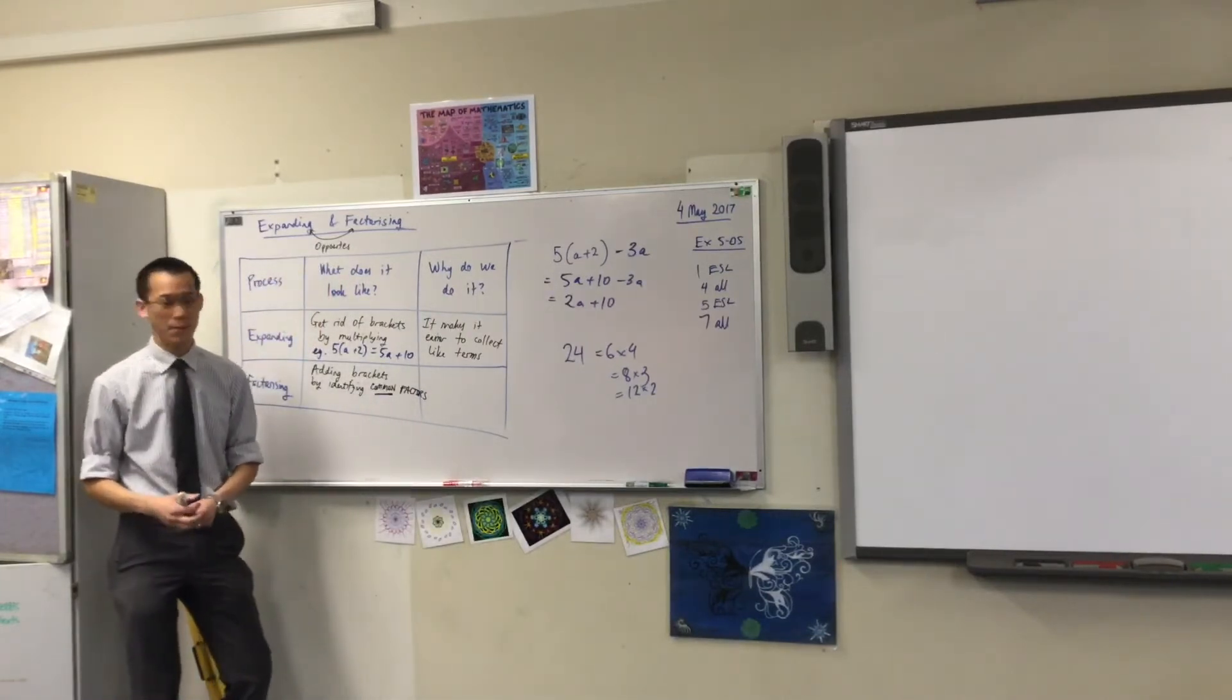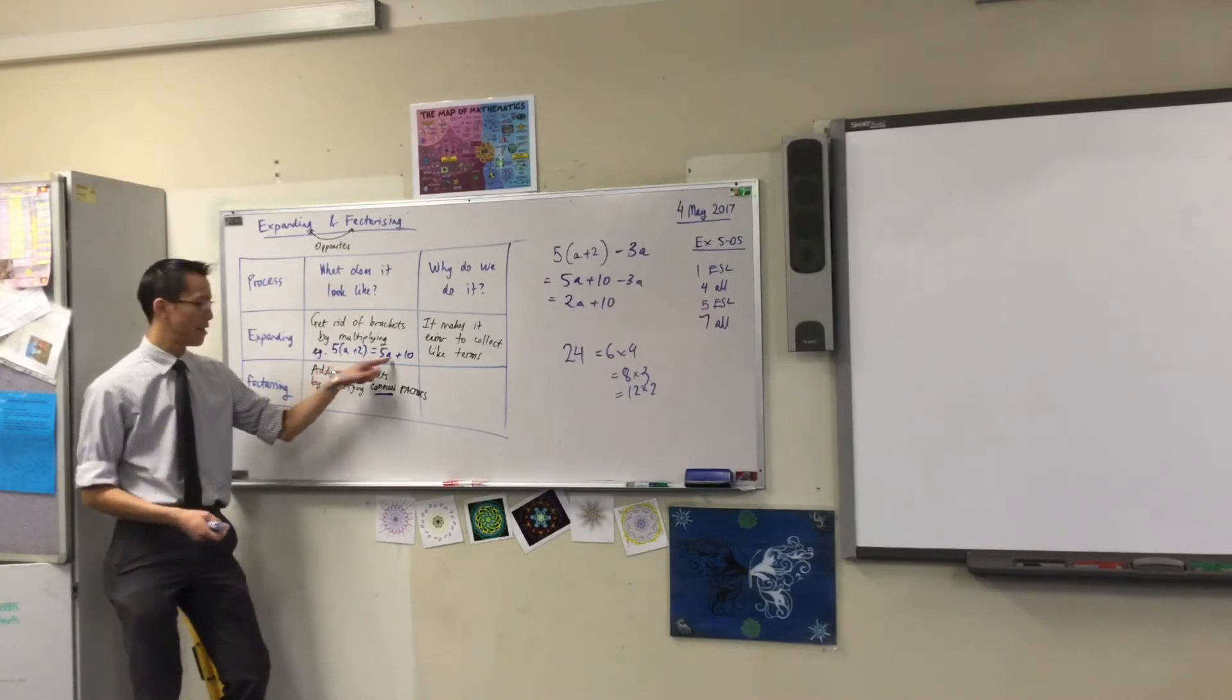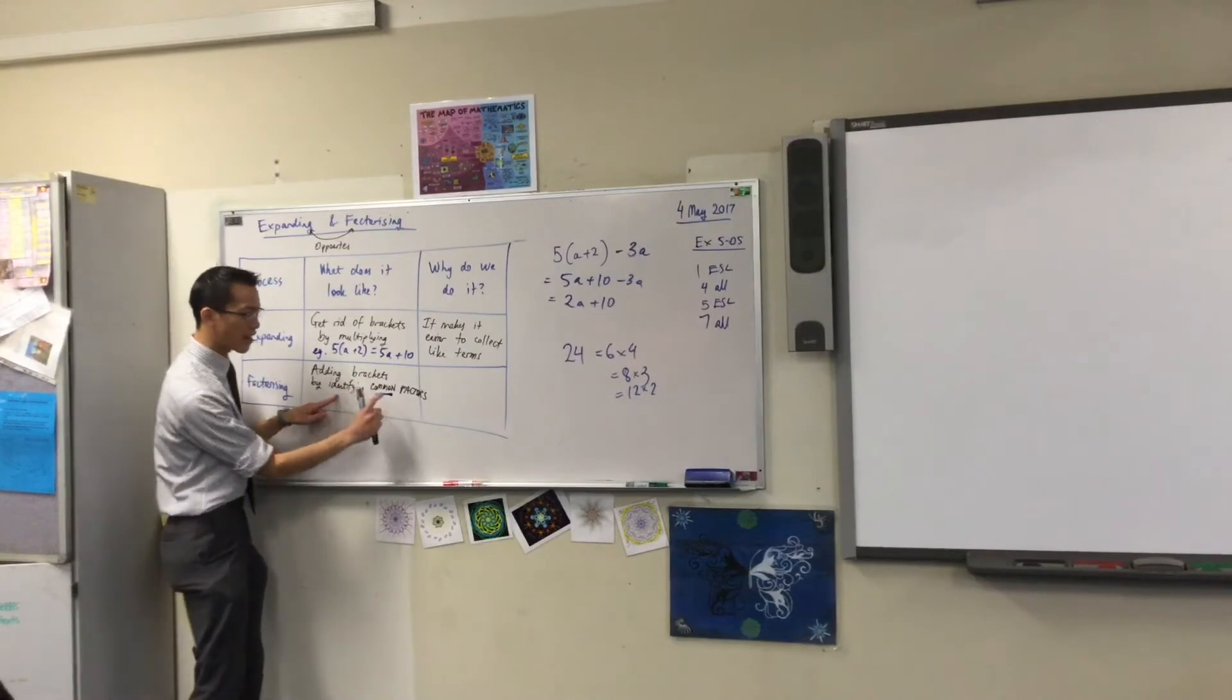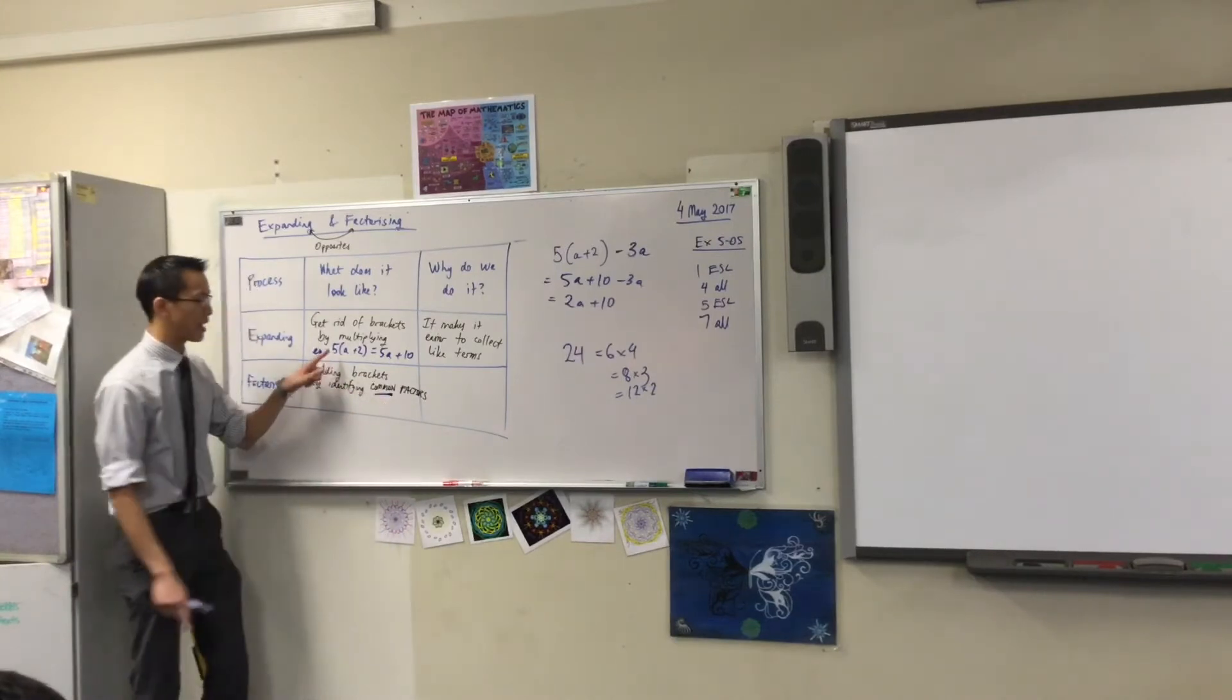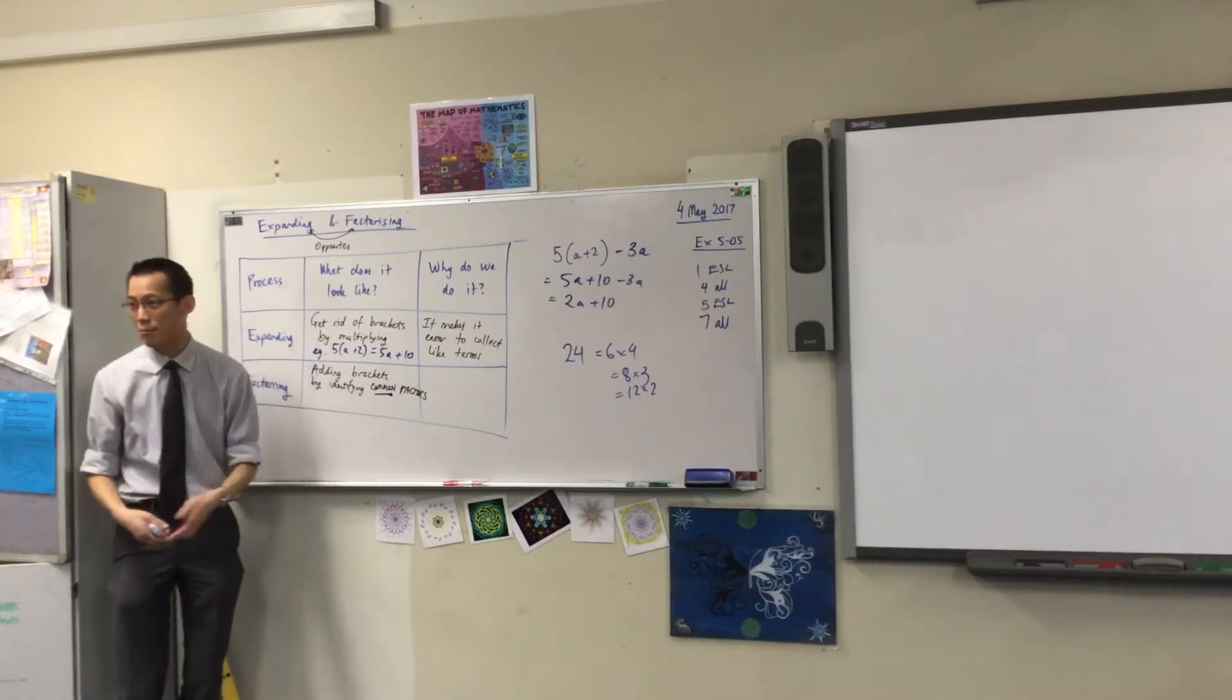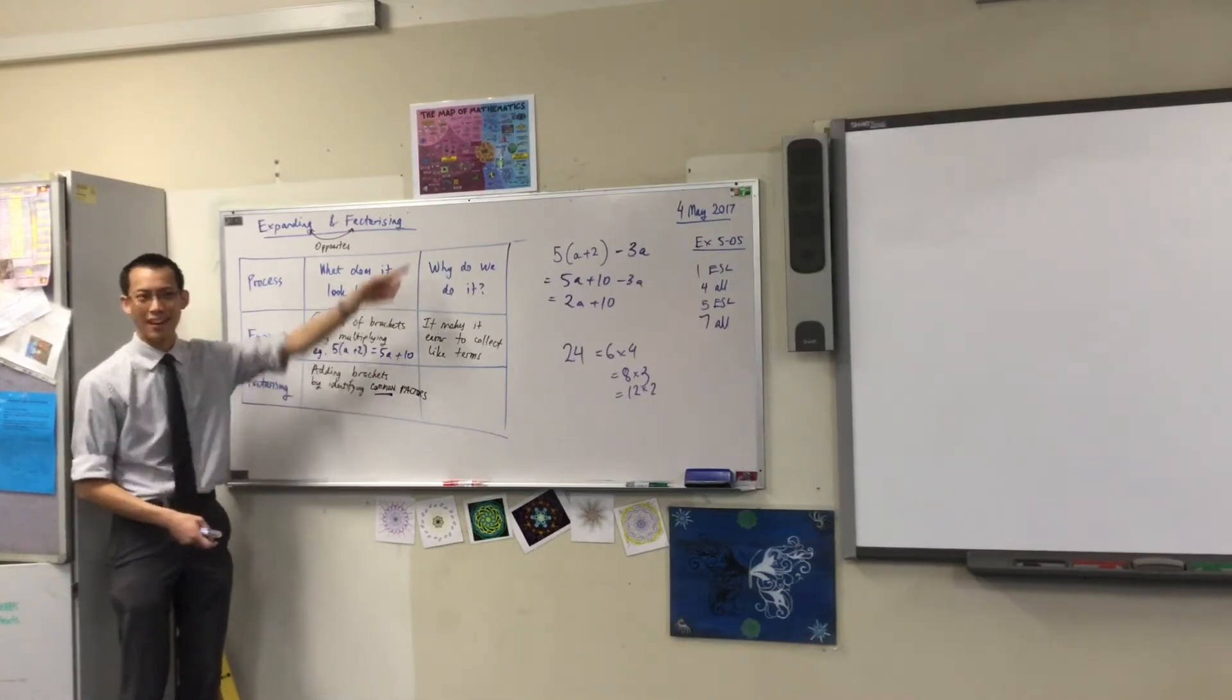Now, you don't need to write another example of this, because you already have, there it is. 5a plus 10. You identify the common factor, which in this case was 5, and then you can take it out and add brackets. Does that make sense? Okay, again, and this is the hard question. Why do we do it?